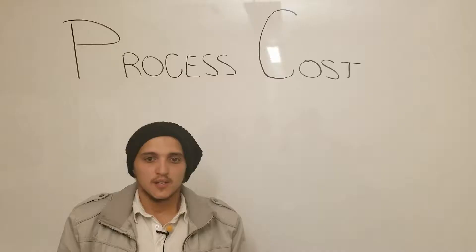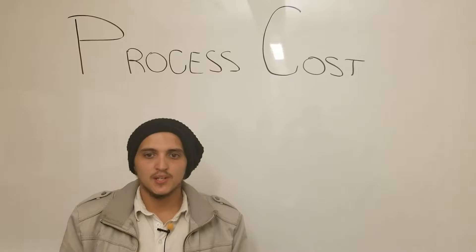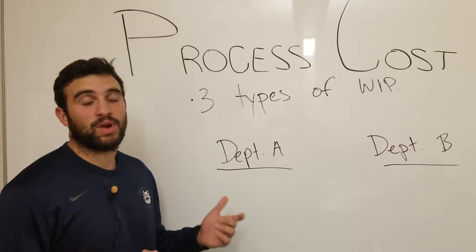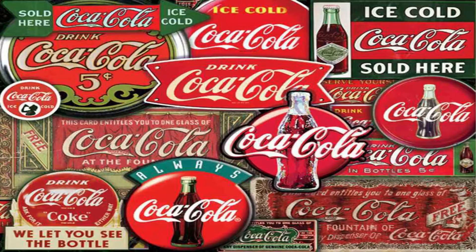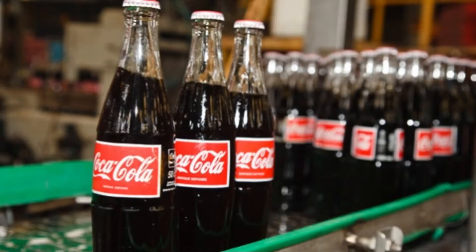Because Coca-Cola produces homogeneous products, they are likely to use the weighted average method. For a product to be in process costing, it has to be homogeneous. Coca-Cola falls under process costing because they are homogeneous with the types of products that they have — they sell soda.